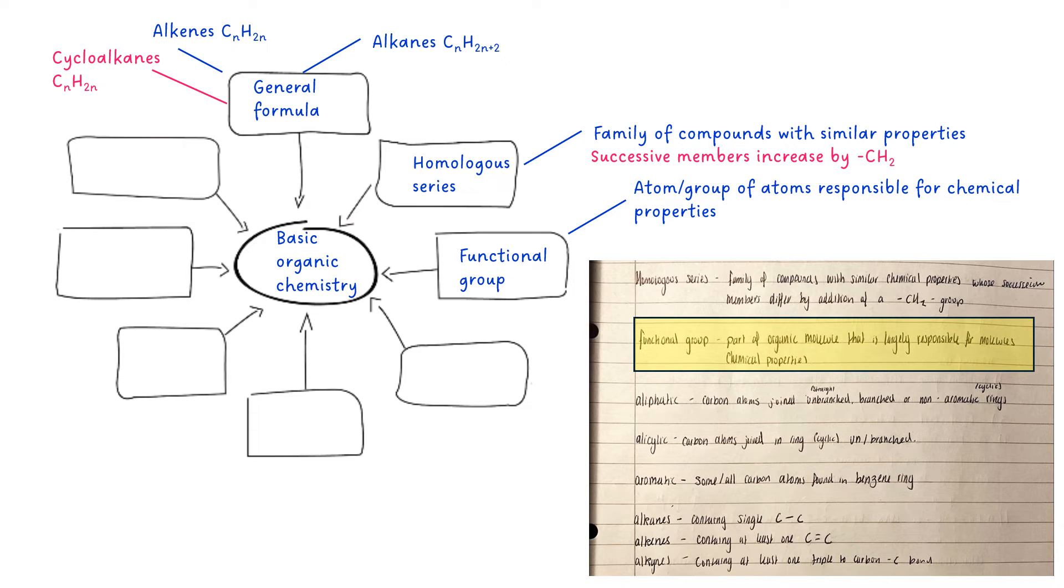A functional group is an atom or group of atoms responsible for chemical properties, and you might want to put some examples in just to flesh it out a little bit. Just one or two is a maximum. Don't go completely to town on this.